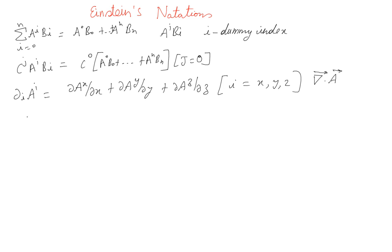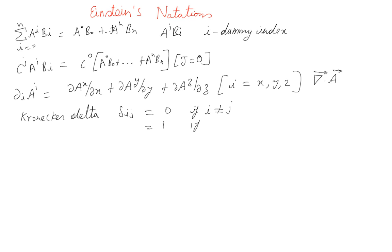Let me introduce two more things. The first is the Kronecker delta, written as delta_ij, which will make life easier when writing equations. It is defined as: delta_ij equals 0 if i does not equal j, and equals 1 if i equals j.